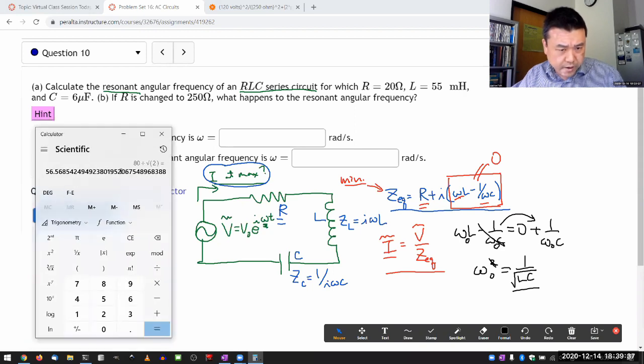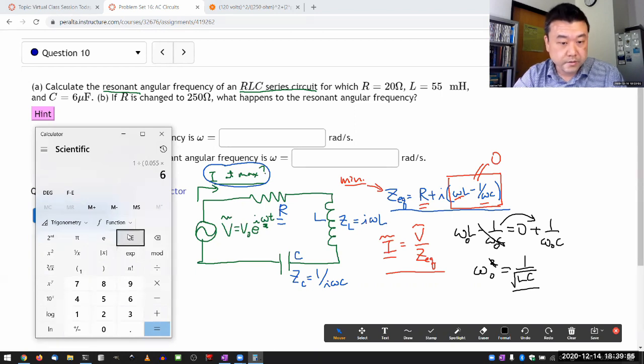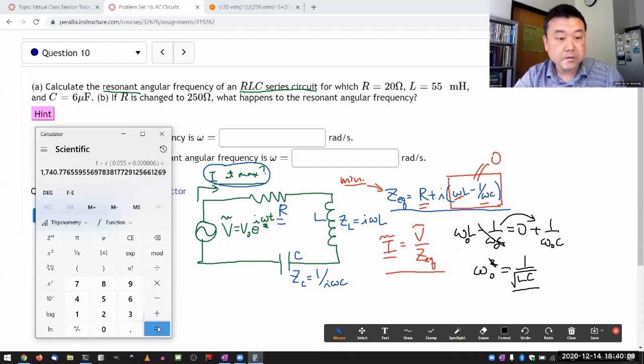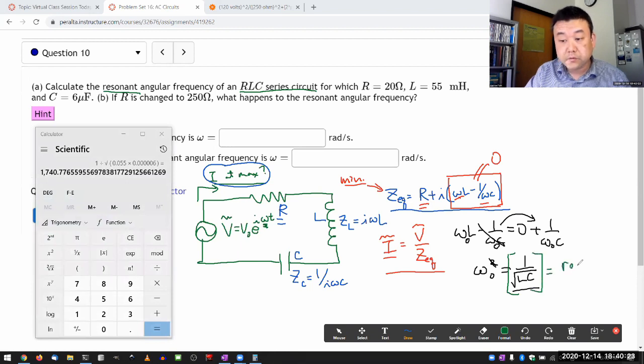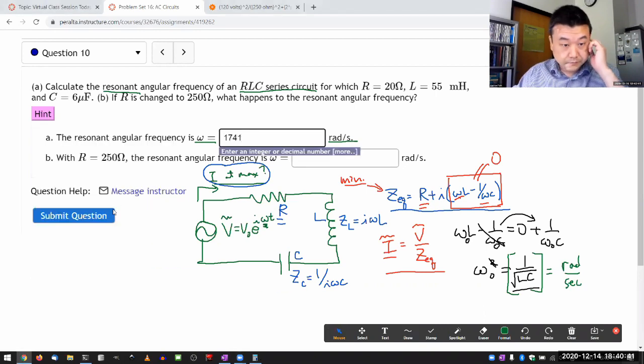So let me plug in the numbers to illustrate something. One over square root of LC, so 55 millihenry, 0.055 henry times six microfarad, six times 10 to the power of minus six. That combined and then take the square root. So I guess 1741. And when I calculate omega, this is in units of radians per second. And since I'm being asked for radians per second, I can just plug this in. If I were being asked for frequency in Hertz, I would have to divide this by two pi. So let me put in 1741. That should say it's correct.